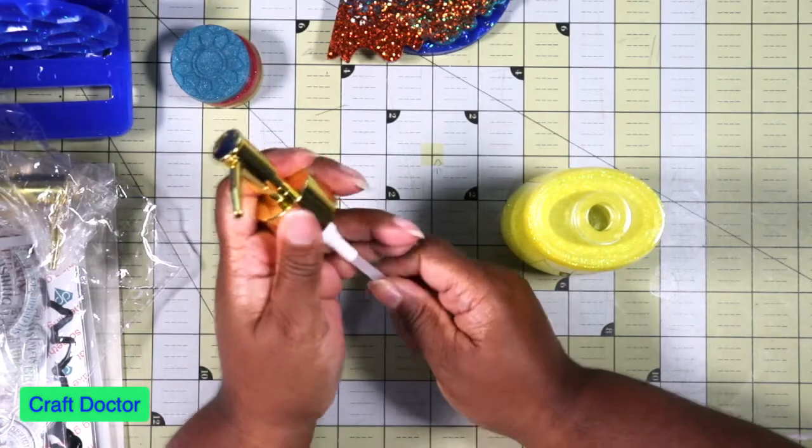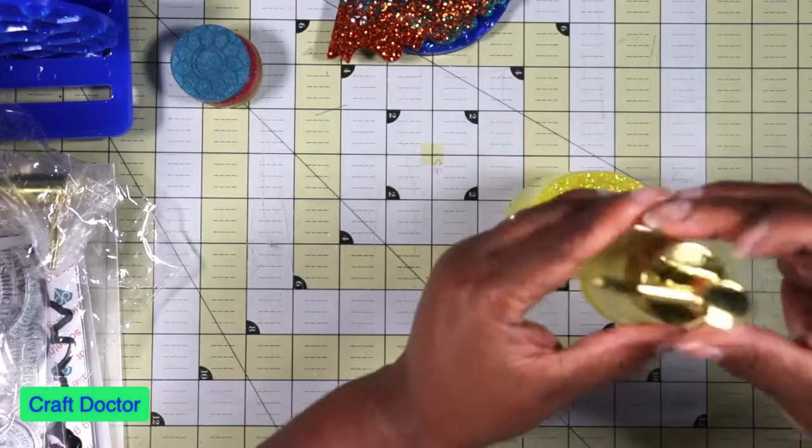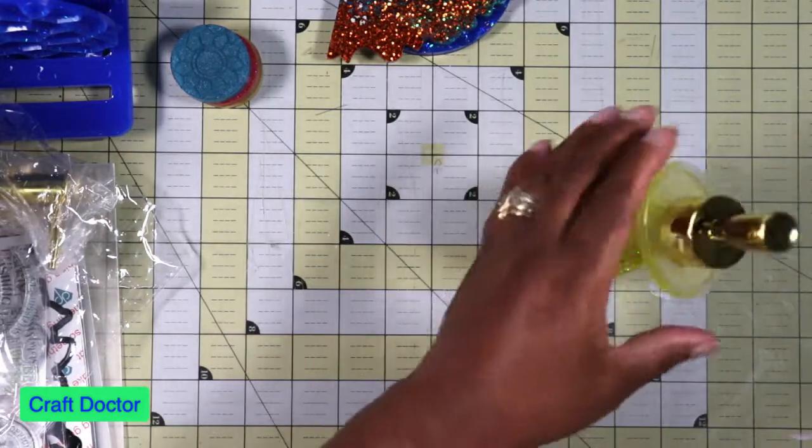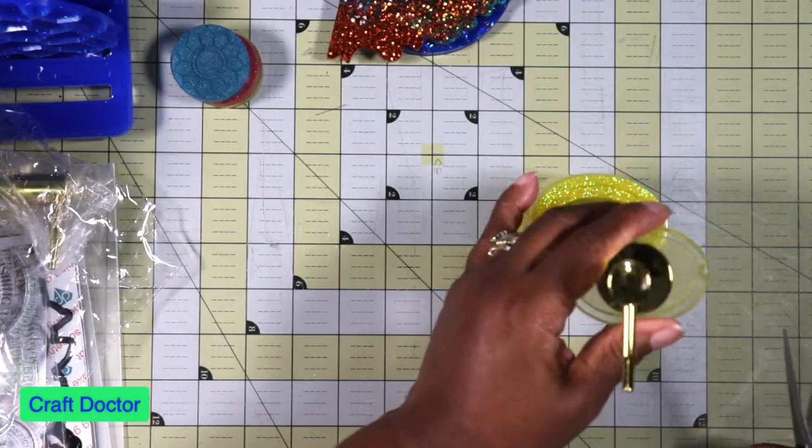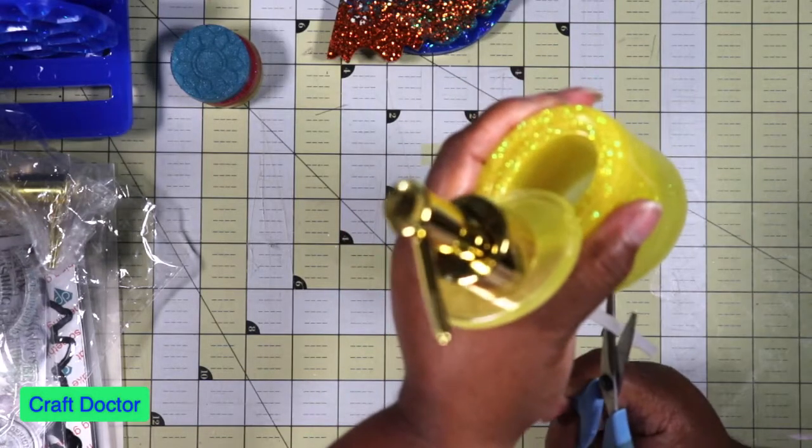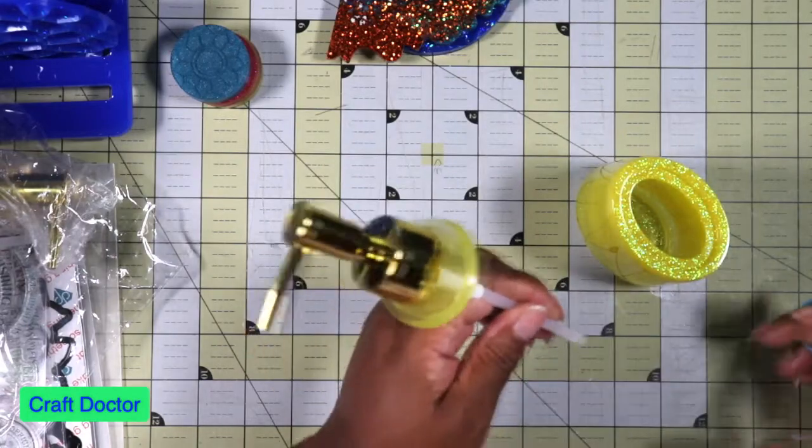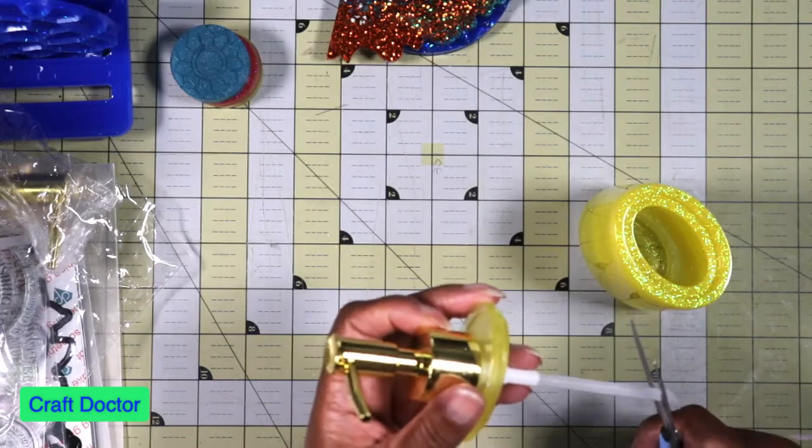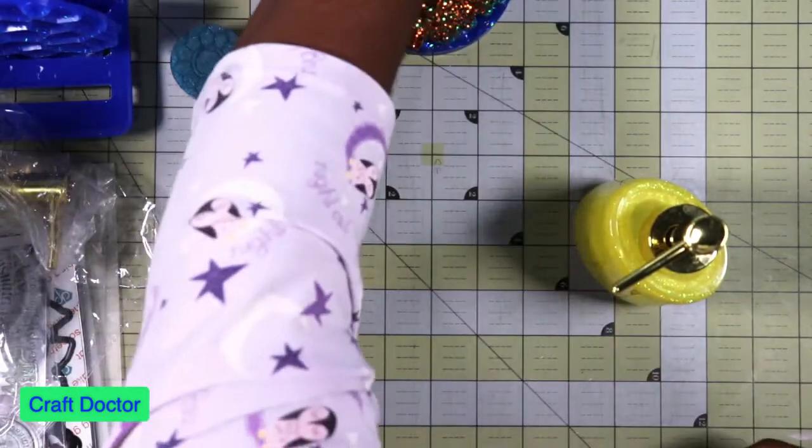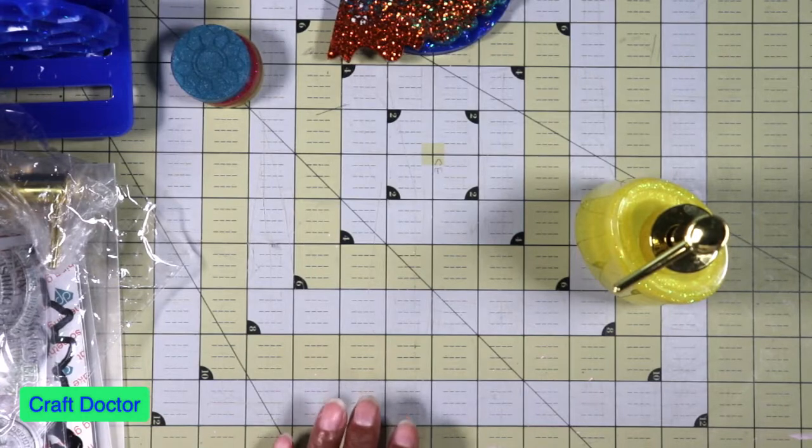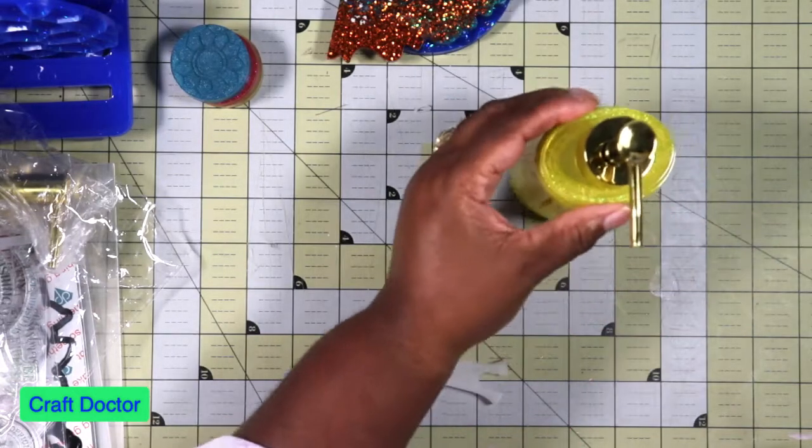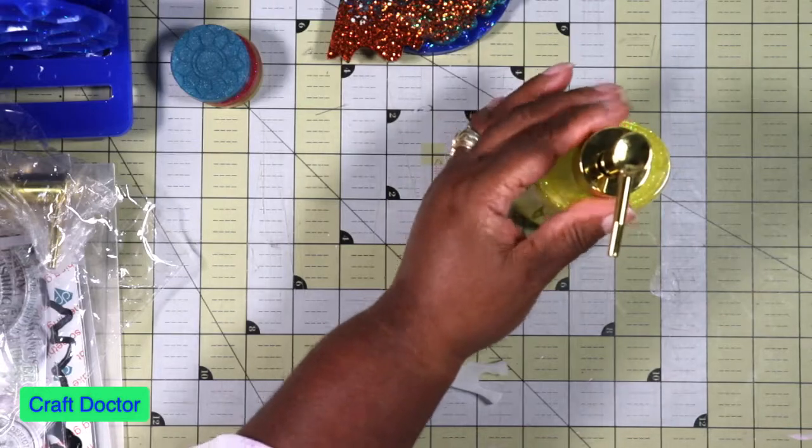This fits in here, and this screws onto that. Of course this needs to be cut because it's too long. Let's cut it. Let's see what to cut it at. We're going to cut it right here. That's still too long, let's cut a little bit more. I should use my Tim Holtz scissors because they're better and sharper.